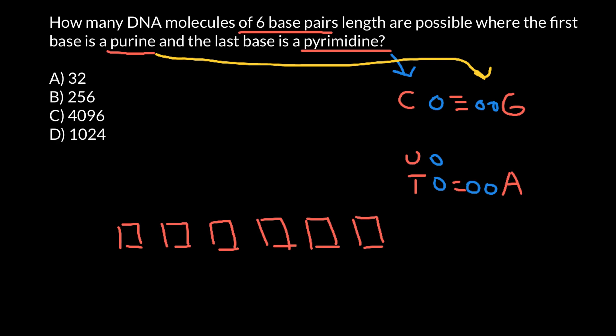And we know that the first position: How many DNA molecules of six base pairs length are possible where the first base is a purine? And we know that purine would be either guanine or adenine. So it can be guanine or adenine.